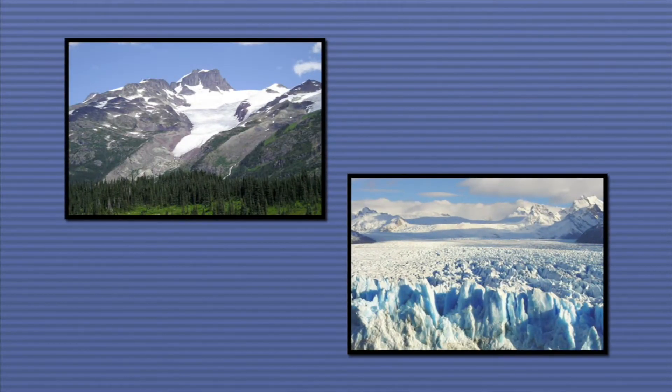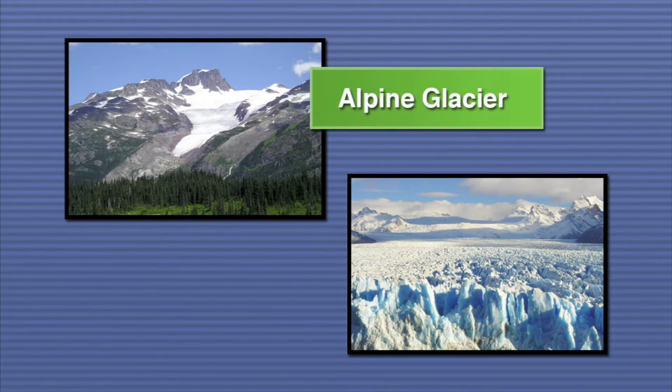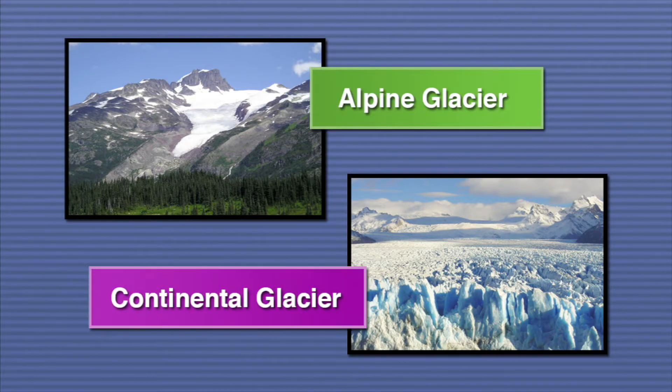There are two types of glaciers based on their size and location: alpine and continental glaciers.